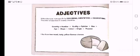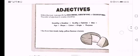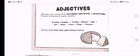The order of adjectives in a series should be quantity or number, quality or opinion, size, age, shape, color, origin, and purpose. So look at the following sentence. They've got the order of adjectives in a series there. I like those two round, tasty, yellow German cheeses.